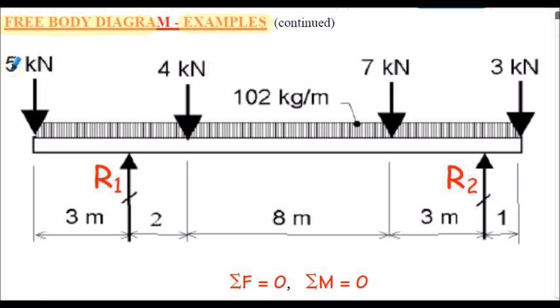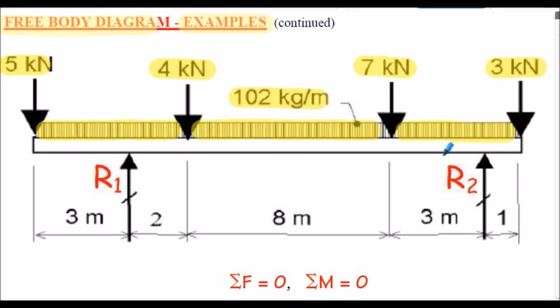Applied loading here to a simply supported beam consists of four point loads and a uniformly distributed load along the entire length of the beam acting downwards, with reactions R1 and R2. To solve this we use static equilibrium: summation of upward forces equals summation of downward forces, and summation of anticlockwise moments equals summation of clockwise moments about any particular point on the beam.